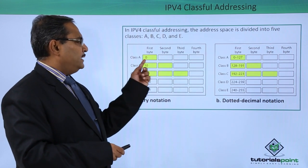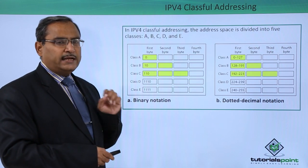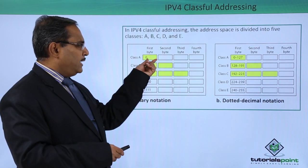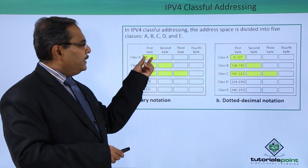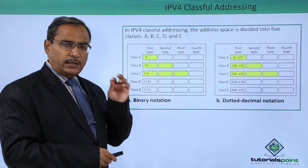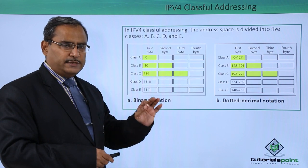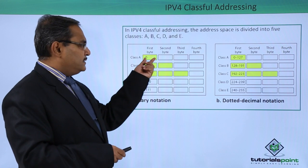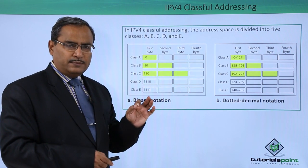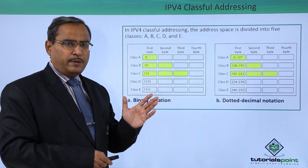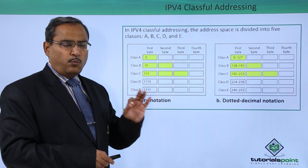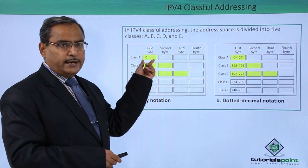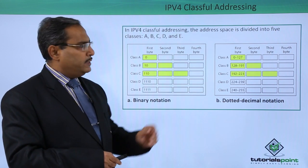In Class A, the first bit is permanently 0, so we have flexibility in the remaining 7 bits. The minimum value with all 7 zeros is 0 (total 8 zeros), and the maximum with all 7 ones represents 127. That is why the Class A net ID ranges from 0 to 127.